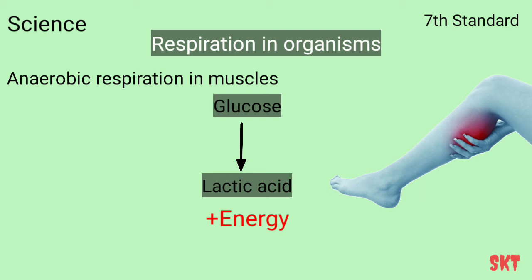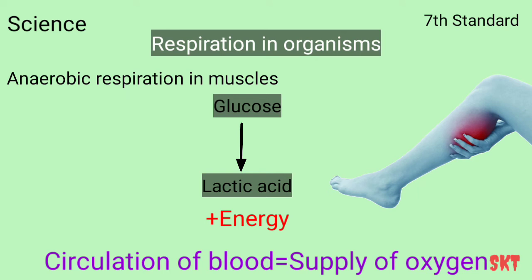We can get away from the pain by doing a hot water bath or a massage. A hot water bath or massage improves blood circulation, and improved circulation results in better oxygen supply. The supply of oxygen helps aerobic respiration resume and the energy needs of our body are fulfilled. So remember: oxygen is supplied to all parts of our body through the blood.